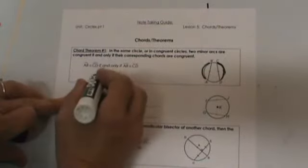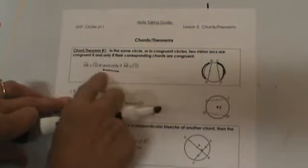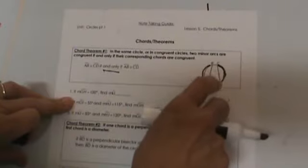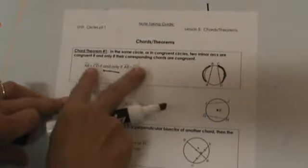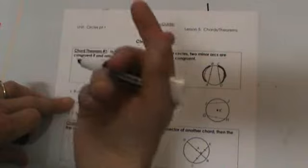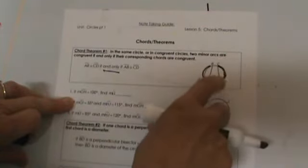Notice this if and only if. If you think back to reasoning, if and only if, it means you can say it both directions. The arcs are congruent if the chords are congruent and the chords are congruent if the arcs are congruent. You can know either piece of information and then deduct the opposite. If you know the arcs, you can say the chords are congruent. If you know the chords, then you can say the arcs are congruent.